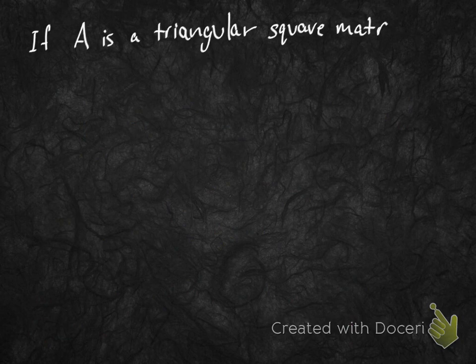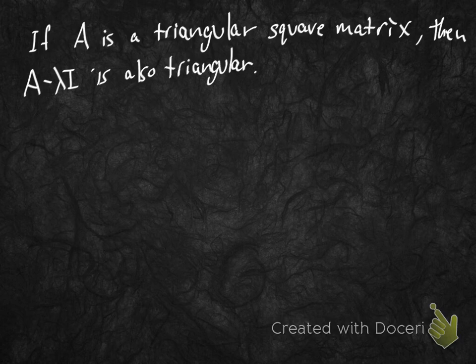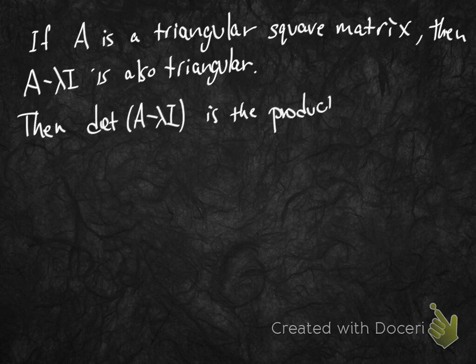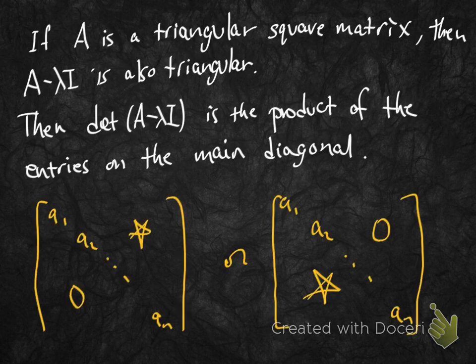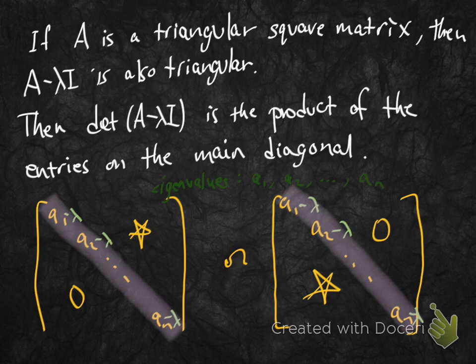This trick works in general for any triangular matrix. If A is an n by n triangular matrix, then A minus lambda times the identity is also triangular, because subtracting lambda only affects the main diagonal entries. The determinant of a triangular matrix is just the product of its diagonal entries, giving us the characteristic polynomial already in factored form. So we can read off that the eigenvalues are just the diagonal entries a1, a2, up to an.